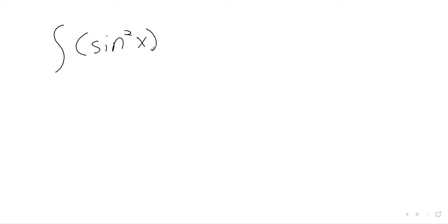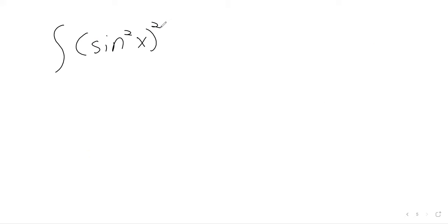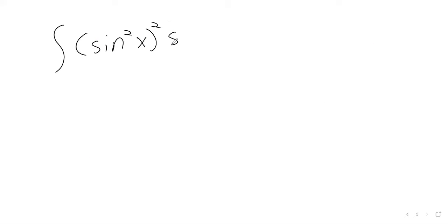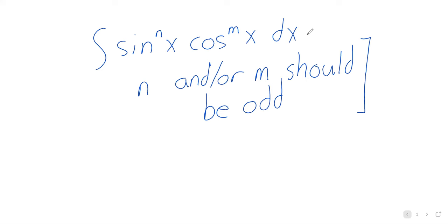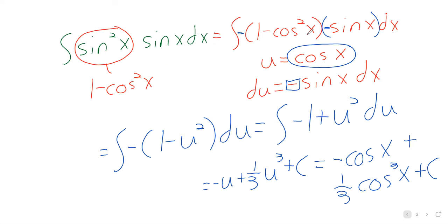So we've got (sine squared of x) squared times sine of x times cosine to the fourth of x. And now sine squared of x, just like we rewrote it in the previous problem, equals one minus cosine squared.